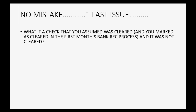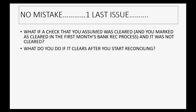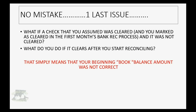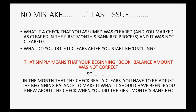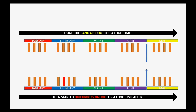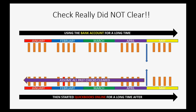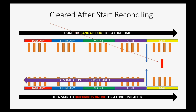What if a check that you assumed was cleared — and marked as cleared as part of the first month's bank rec process — was actually not cleared? What do you do if it clears after you start reconciling? That simply means your beginning book balance amount was not correct when you made your first beginning balance adjustment. So in the month that the check really clears, you have to readjust the beginning balance to reflect what it should have been if you had known about that check when you did the first month's bank rec. So let's take a look at the diagram.